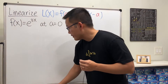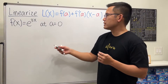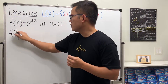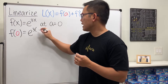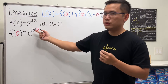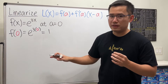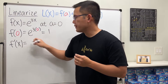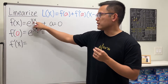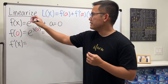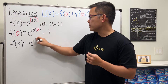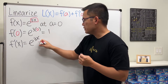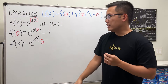Let's get to work. First, compute f of a. We know that f of a at zero is just e to the 3 times 0, which is e to the 0, and that equals 1. Then we get the derivative. The derivative of e to the something is just that thing times the chain rule, so f prime of x is e to the 3x, multiplied by the derivative of 3x, which is 3.